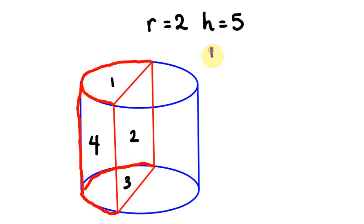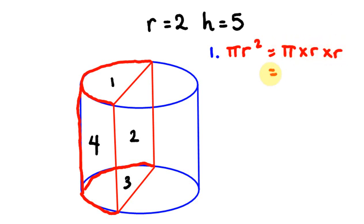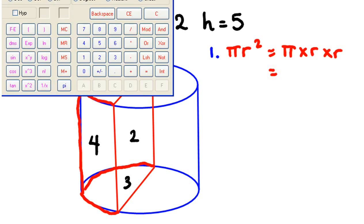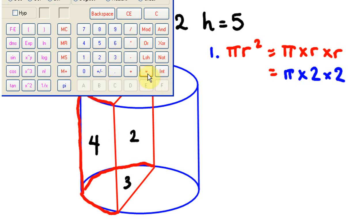First, let's work out the surface area of part 1, which is a half circle. The area of a full circle uses the formula π r squared — that's pi times r times r. I'll get the calculator: pi times 2 times 2 gives us 12.56. But we actually want half a circle.